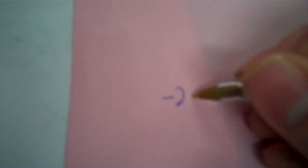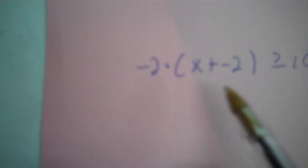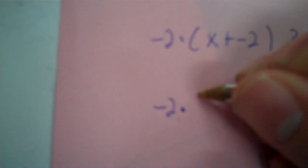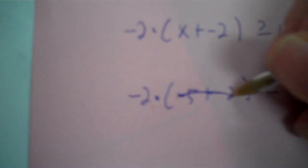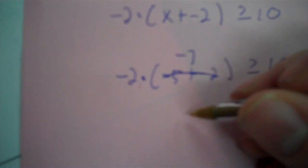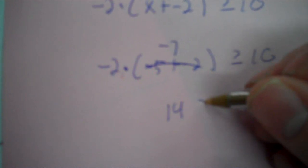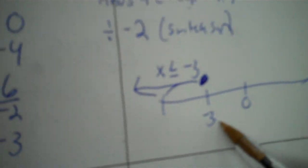To check, pick a number less than negative 3 — say negative 5. Plug into the original: negative 2 times the quantity negative 5 minus 2. Inside the parentheses: negative 7. Negative 2 times negative 7 is 14. So 14 greater than or equal to 10 — it eats the bigger number, so the answer is correct. Plugging in the actual value of negative 3 makes both sides equal.